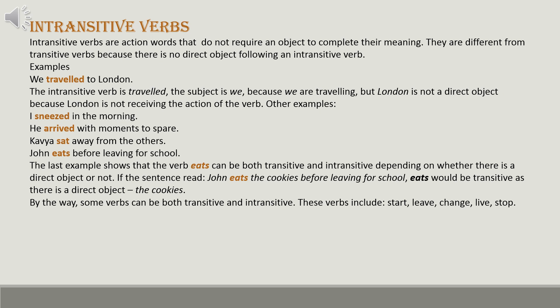Now let us know about the second kind of verb: intransitive verbs. Intransitive verbs are action words that do not require an object to complete their meaning. They differ from transitive verbs because there is no direct object following them. For example: 'We traveled to London.' The intransitive verb is 'traveled'; the subject is 'we,' and 'London' is not a direct object because it is not receiving the action.